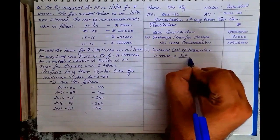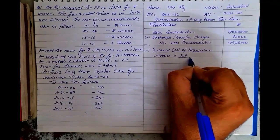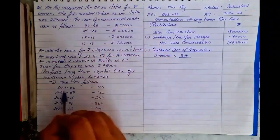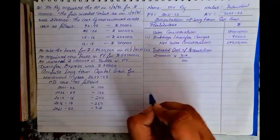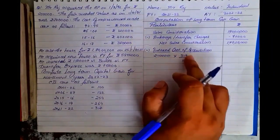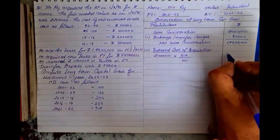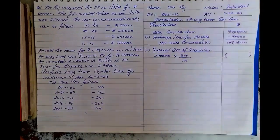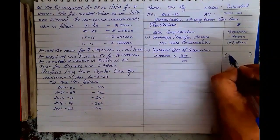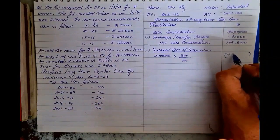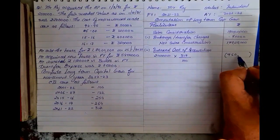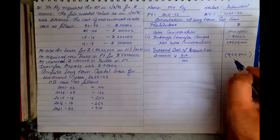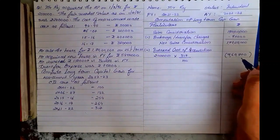You multiply and divide using the CII formula — cost of acquisition of Rs. 2,40,000 multiplied by CII of previous year divided by CII of year of acquisition — and the indexed cost of acquisition comes to approximately Rs. 3,60,800.